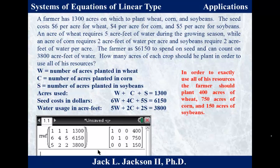Let W = acres of wheat, C = corn, S = soybeans. The three equations are: W + C + S = 1,300 (total acres); 6W + 4C + 5S = 6,150 (seed cost); 5W + 2C + 2S = 3,800 (water usage). Using a calculator (TI-Nspire or TI-84 — see the previous video for method), the solution is W = 400 acres of wheat, C = 750 acres of corn, and S = 150 acres of soybeans.